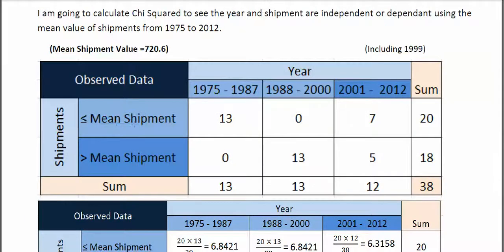This person has used the mean here, to split it horizontally this way, and they've used three different year groups to split it vertically. So they've got a two by three, they've got two rows and three columns.